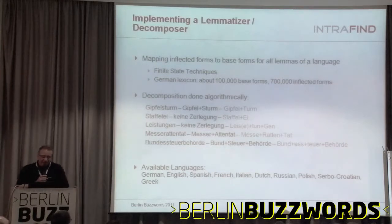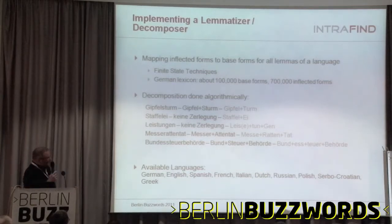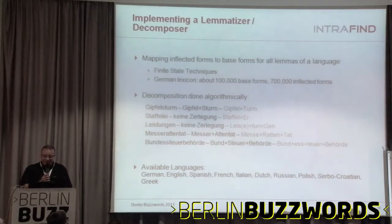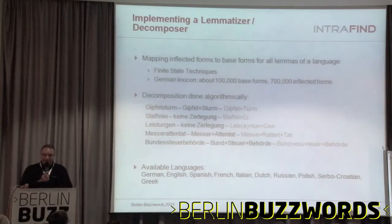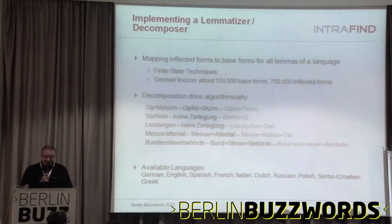How is it implemented? It's handcrafted. For German, we have about 100,000 base forms and mappings to all inflected forms, stored in a letter tree that fits in memory. For decomposition, the algorithm starts from the back of a word and tries to find the longest match if it doesn't find the whole word in the letter tree. But this simple algorithm is not enough — you get many wrong decompositions and need heavy filtering and fine-grained categories.